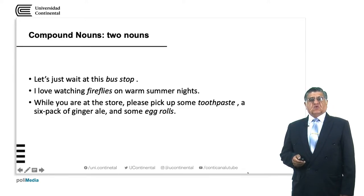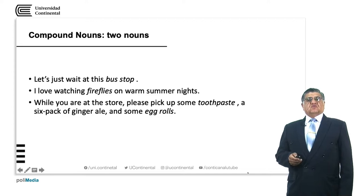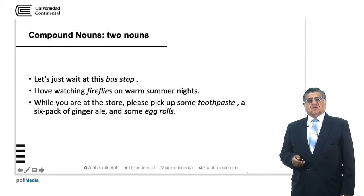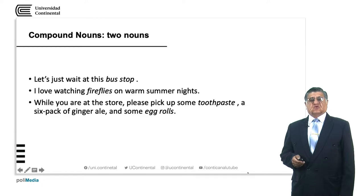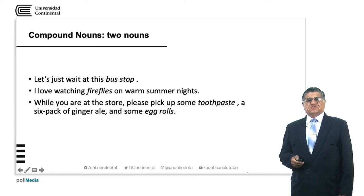Another example: 'While you are at the store, please pick up some toothpaste, a six-pack of ginger ale, and some egg rolls.' Toothpaste — tooth is a part of the body and paste is a substance we use to clean; toothpaste is used to clean the teeth. Six-pack — a pack of six cans or bottles, a set of six things. Ginger ale is a kind of beer made of ginger. Egg rolls — a set of rolls sold in specific containers.